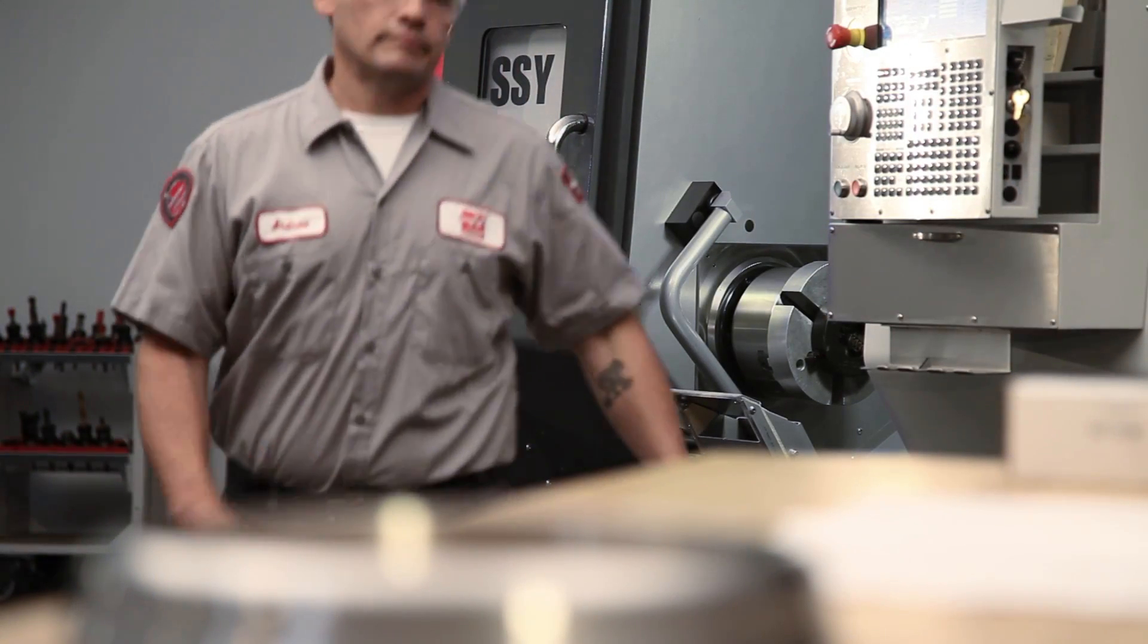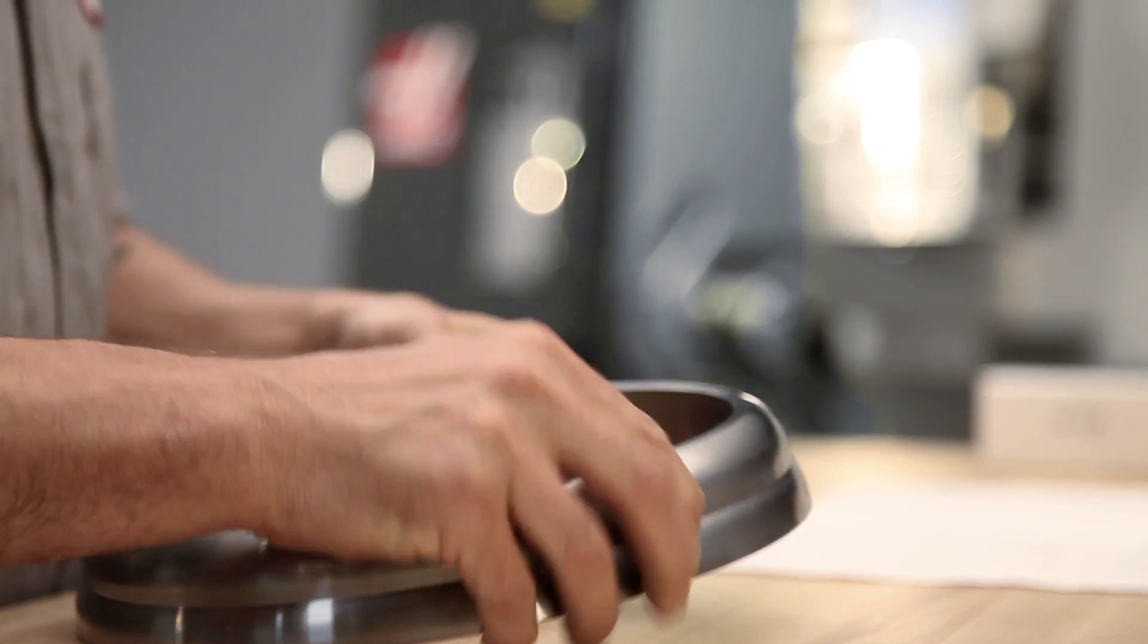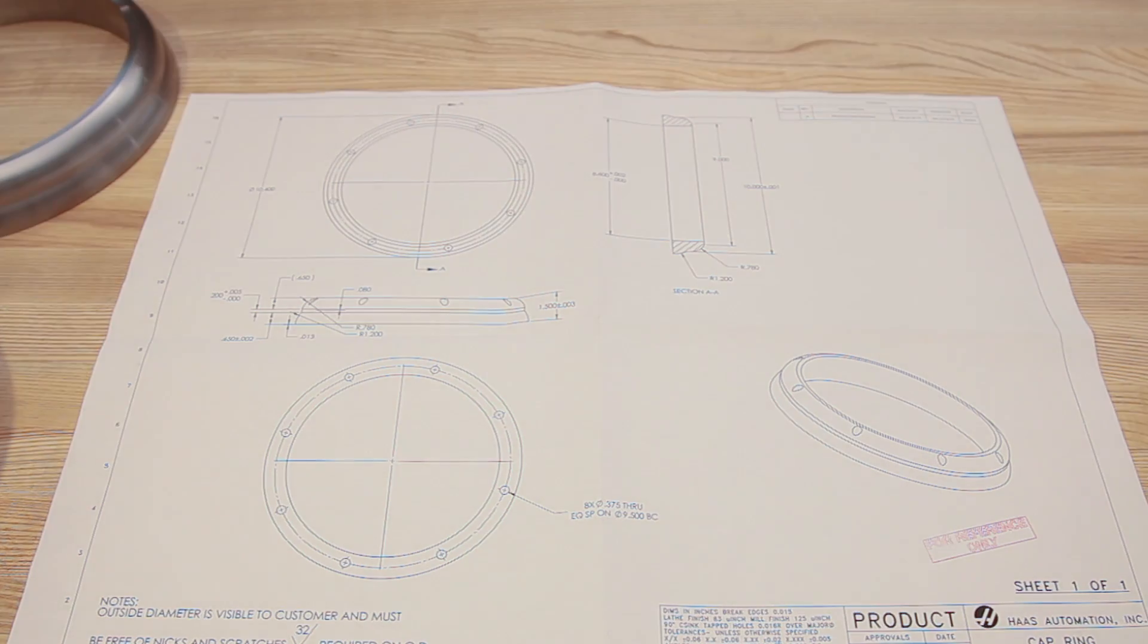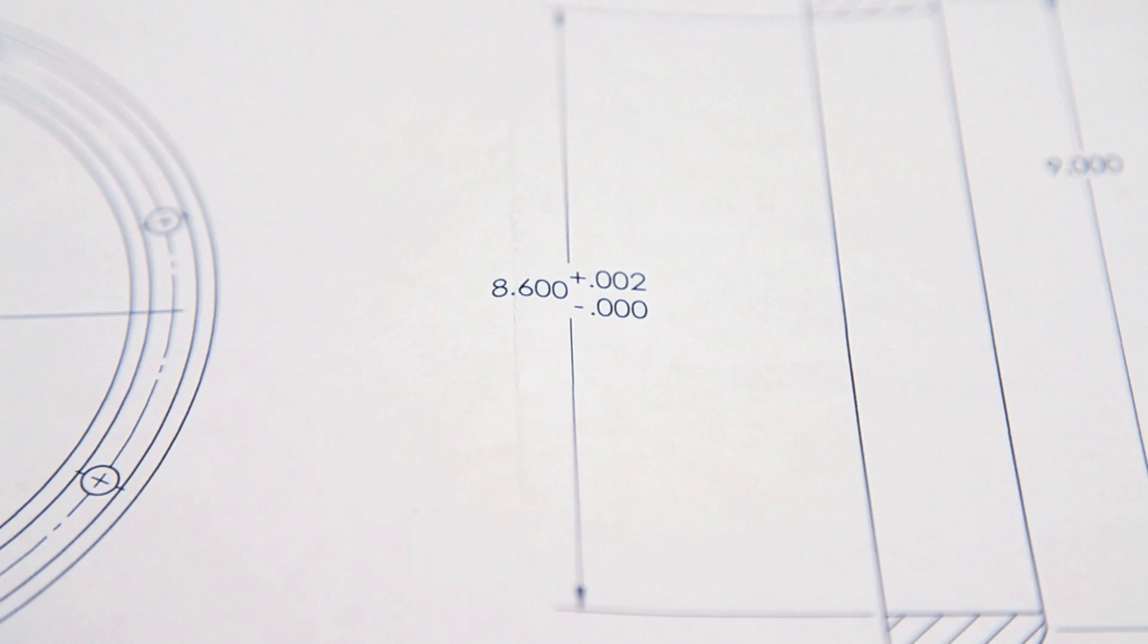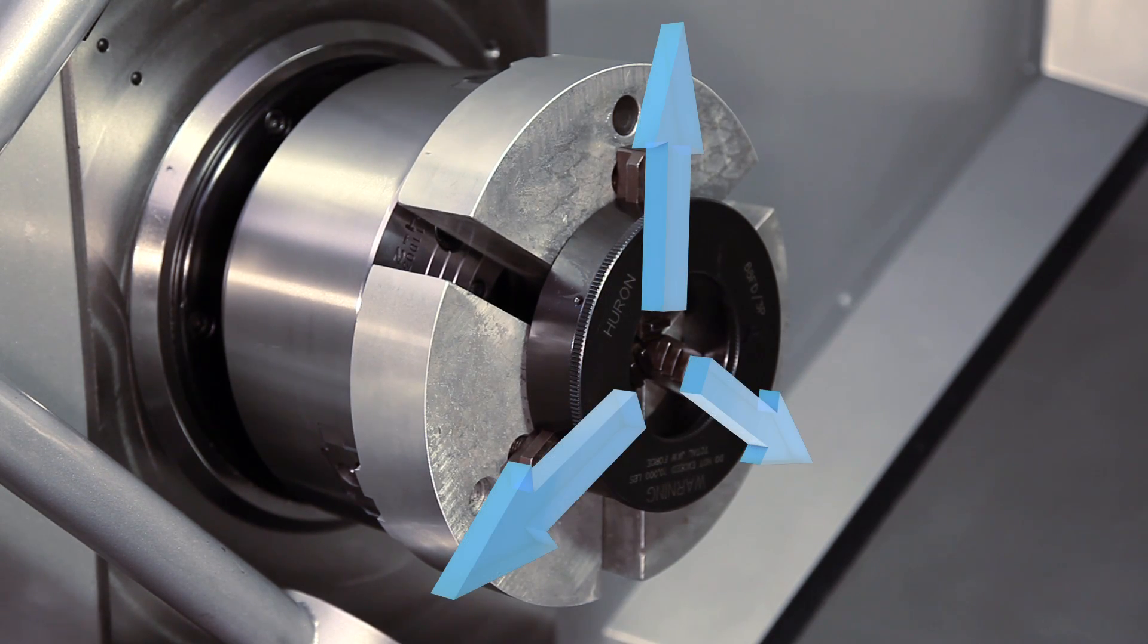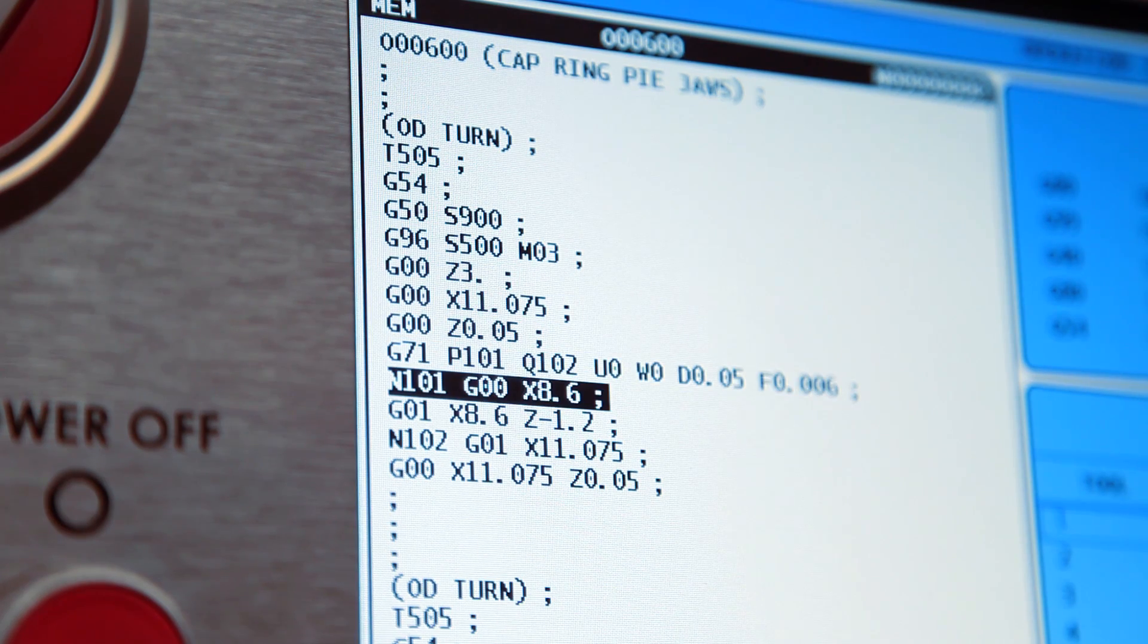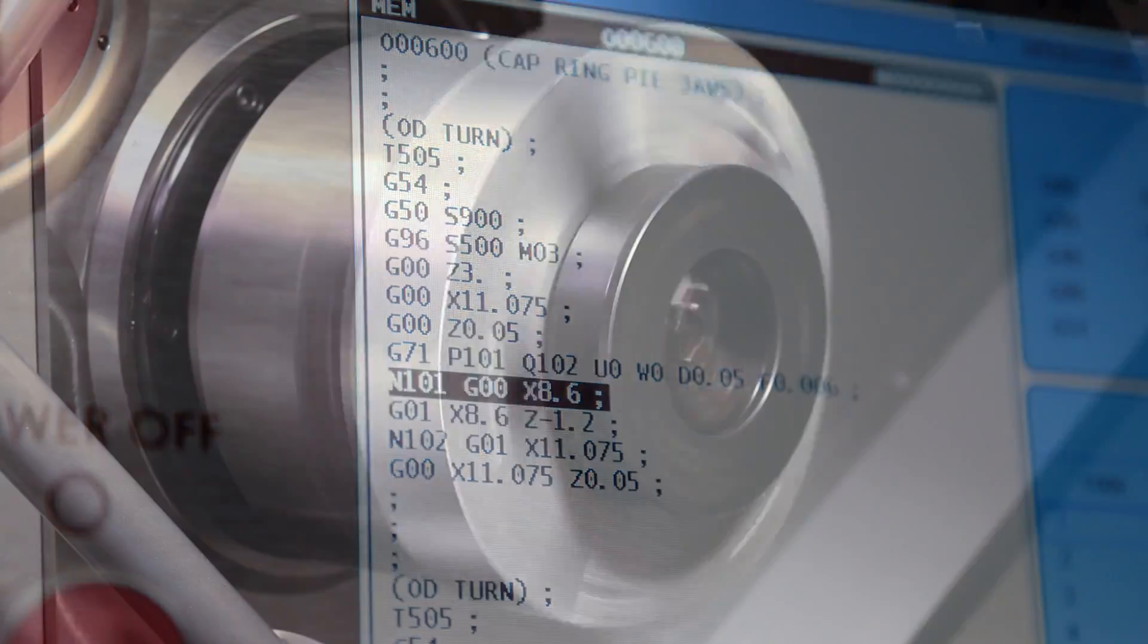Regardless of what kind of ID gripping jaws you are using, jaws holding the inside diameter of the workpiece should always be cut to match the nominal workpiece diameter. With the jaws pushing outward against the boring ring at 100 psi, the master jaws at mid-stroke, and our program set to cut to the nominal part diameter, these jaws are ready to cut.